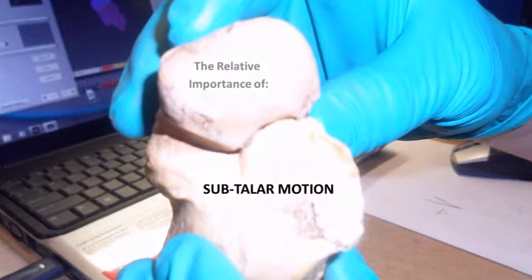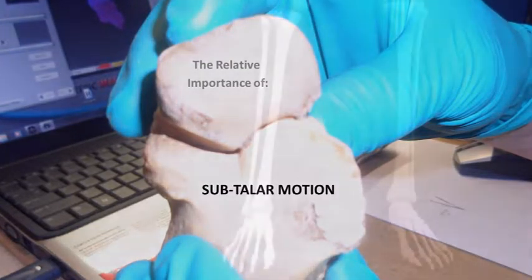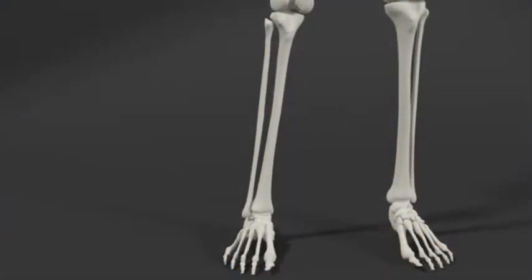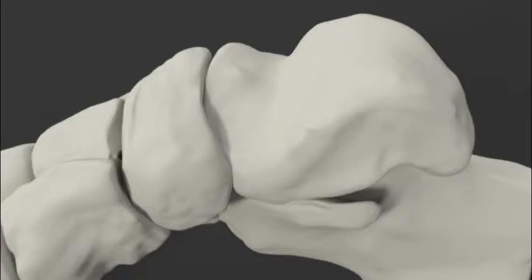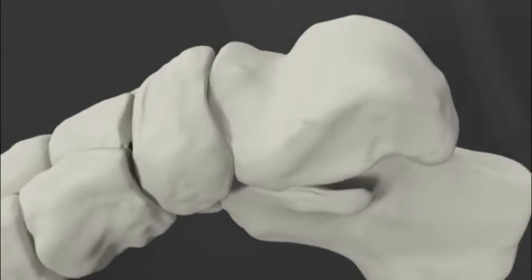The subtalar joint axis does have an important role. Once the arch is sufficiently elevated, the anterior facet of the subtalar joint approaches level. Then and only then can the talus slide posteriorly and externally rotate onto the anterior facet. This slight motion is enough to block sagittal plane motion between these two bones.